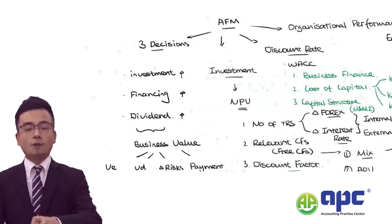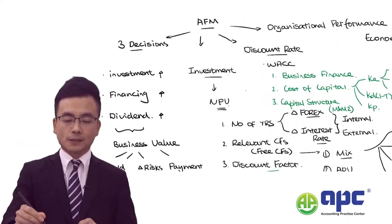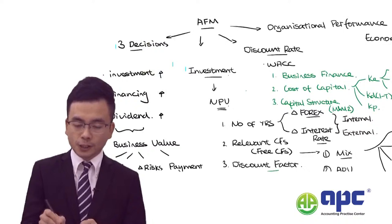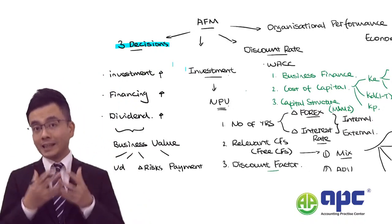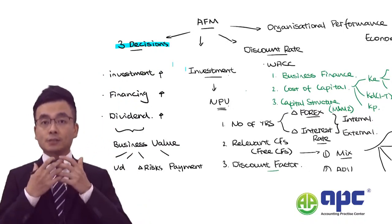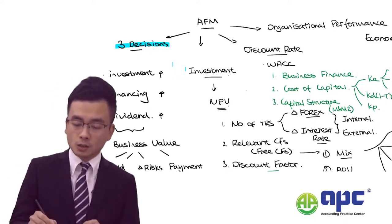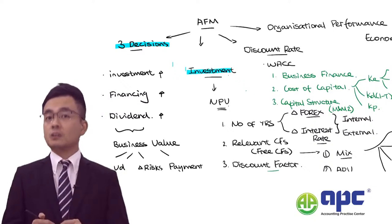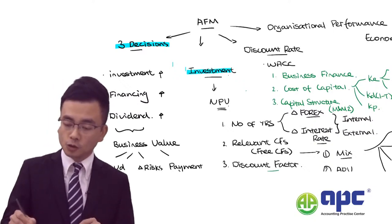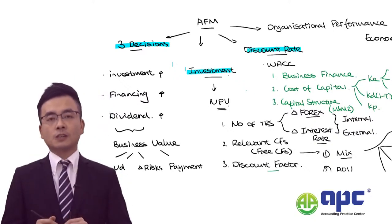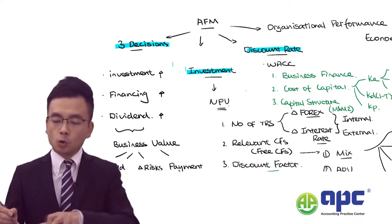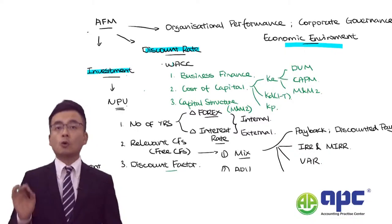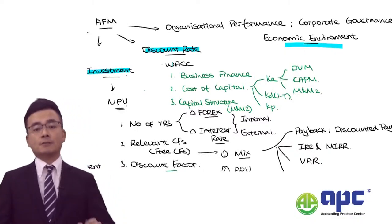If you know these four key areas — the three decisions which are interlinked and affect business value, the investment decision based on free cash flows, the discount rates, and all sorts of written parts — you will score very high in the AFM exam.